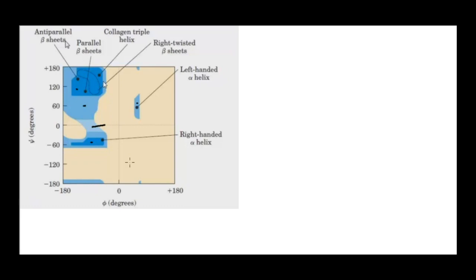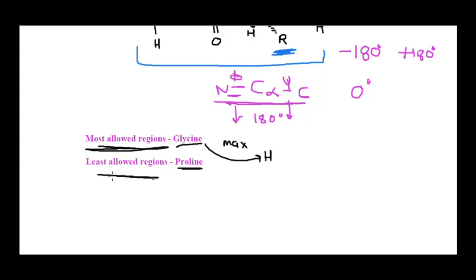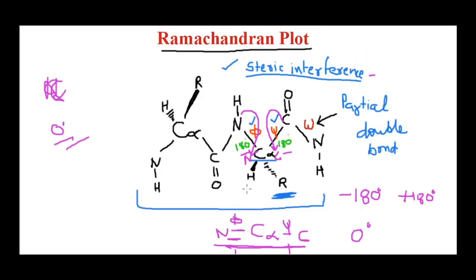The Ramachandran plot was very helpful to understand allowed bond angles before modern software existed. Based on this, there are two notable amino acids: glycine occupies the most allowed region in the plot, because its R-chain has just a single proton, so steric hindrance is very low. On the other hand, proline is in the least allowed region, because its R-group is involved in ring structure formation, making it very bulky — steric hindrance is very high.